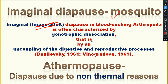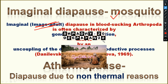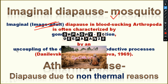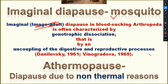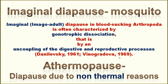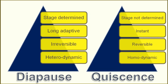Diapause in blood-sucking arthropods is often characterized by gonotrophic dissociation — an uncoupling of digestive and reproductive processes. Athermopause is diapause due to non-thermal factors, meaning diapause occurring due to reasons other than temperature. Key characteristics of diapause: stage is determined, long adaptive, irreversible, and heterodynamic.